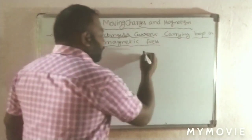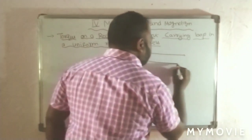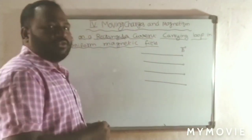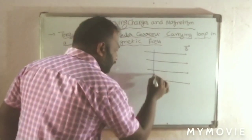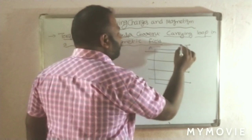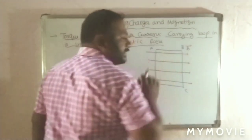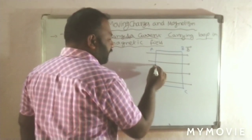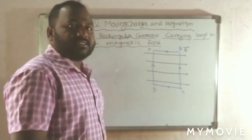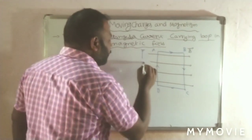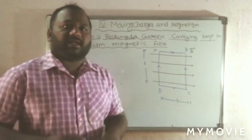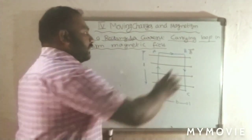For that, I consider a uniform magnetic field, represented with B-bar. In this uniform magnetic field, I place a current-carrying rectangular loop ABCD. This is the field direction and the current direction in the loop is considered like this. This is the current-carrying loop placed in a magnetic field. The length of the loop is L and the width of the loop can be taken as D.